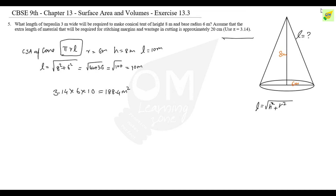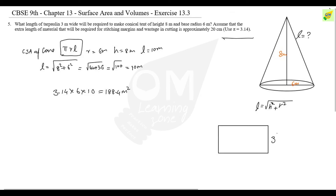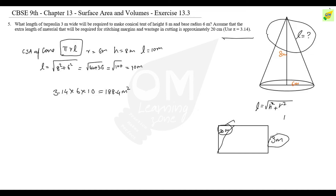Now, what length of tarpaulin that is 3 meters wide is required? The width is 3 meters. Note that 100 centimeters equals 1 meter, so 20 centimeters equals 0.2 meters.